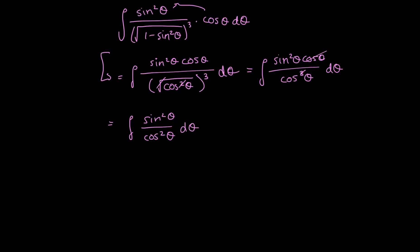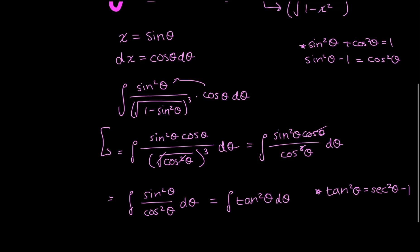This should ring a bell. This is equal to the integral of tangent squared theta d theta. And now I'm going to be using another trig identity, which is that tan squared theta equals secant squared theta minus 1. And this is something you could derive from this identity.